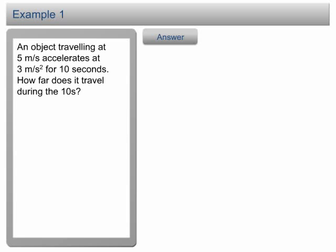Let us list down the information that we have. An object traveling at 5 m per second means the initial velocity u equals 5 m per second, the acceleration a equals 3 m per second squared, and it travels for 10 seconds means the time taken t equals 10 seconds.